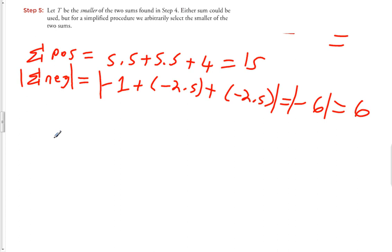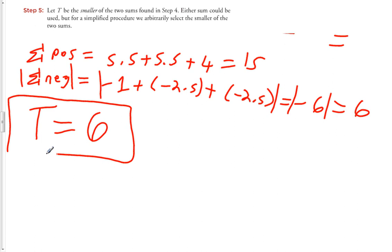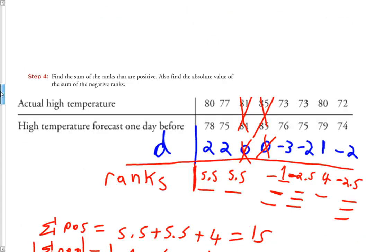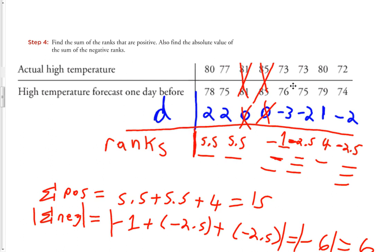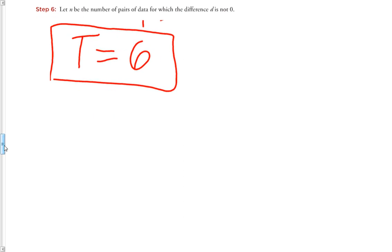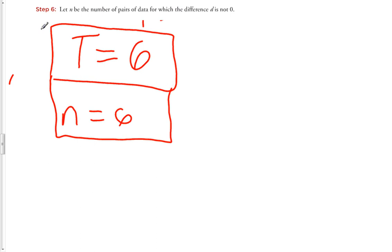Step five is to let T be the smaller of the two sums found in step four. The two sums were 15 and 6, and the smaller of the two is 6, so T equals 6. Step six is to let N be the number of pairs of data for which the difference is not zero. We had 6 such pairs, so N is also equal to 6.